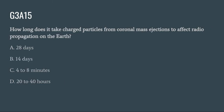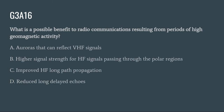G3A15: How long does it take charged particles from coronal mass ejections to affect radio propagation on the Earth? A. 28 days. B. 14 days. C. 4 to 8 minutes. Or D. 20 to 40 hours. The correct answer is D: 20 to 40 hours.